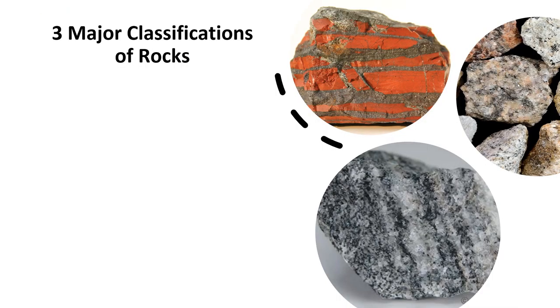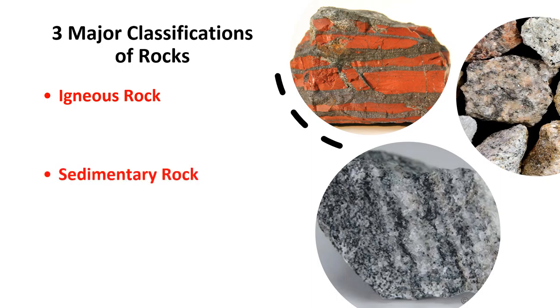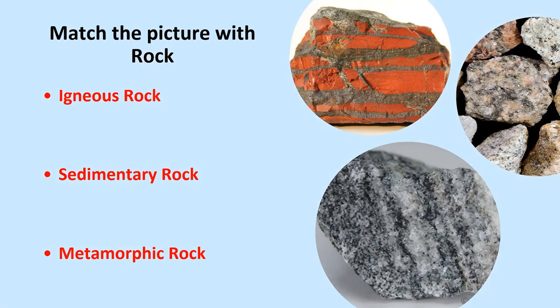In junior high — and even in geology — there are three major classifications of rock. The first type is known as igneous, the second is known as sedimentary, and the third type is known as metamorphic. I want you to match the picture with the rock type: which one do you think is igneous, which is sedimentary, which is metamorphic? As time goes on, we are going to discover what represents what in detail.